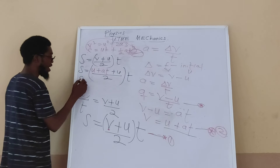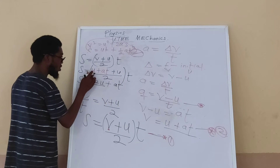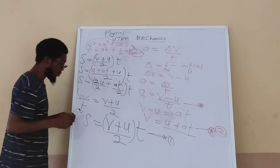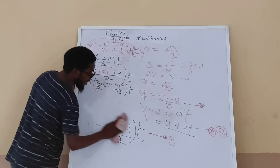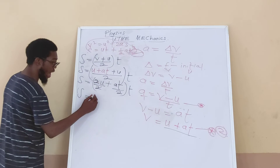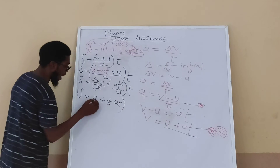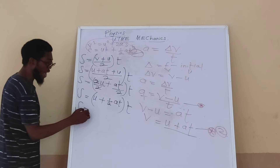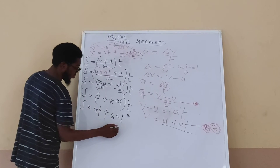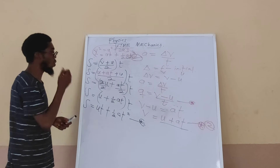Expanding the bracket: s = (2u + at) / 2 × t. The 2 in the numerator cancels with the denominator, giving s = (u + ½at) × t. Multiplying through by t: s = ut + ½at². This is how we derive the equation s = ut + ½at².